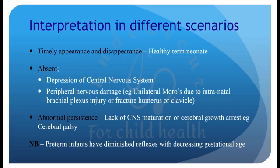Coming on to interpretation in different scenarios: timely appearance and disappearance is suggestive of a healthy neonate. Reflexes are absent in depression of the central nervous system or peripheral nerve damage — for example, unilateral Moro is seen due to intranatal brachial plexus injury or fractured humerus or clavicle. Abnormal persistence is because of lack of CNS maturation or arrest of cerebral growth, e.g., cerebral palsy. It is important to note that preterm infants have diminished reflexes with decreasing gestational age, also because of lack of CNS maturity.